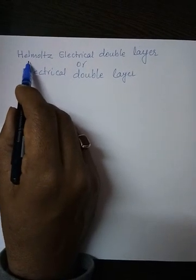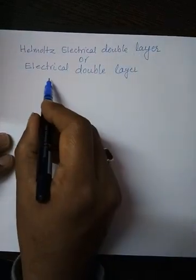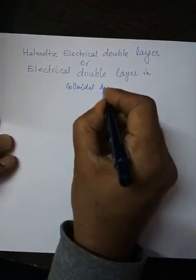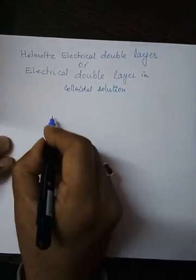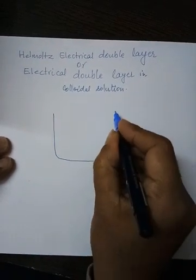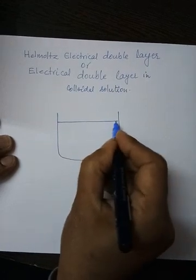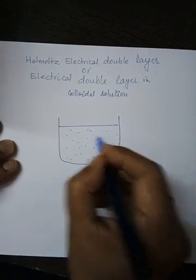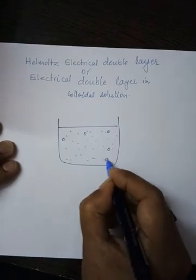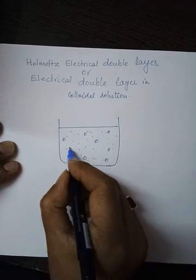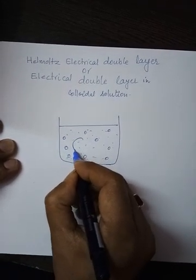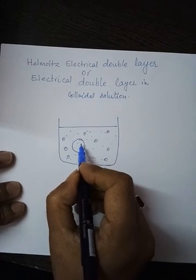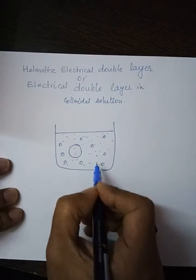Today the topic is the Helmholtz electrical double layer, or electrical double layer in colloidal solution. Suppose we have a colloidal solution — these are particles of the dispersant medium, and these are colloidal particles dispersed in it, forming the dispersed phase. I am drawing a larger colloidal particle for convenience.